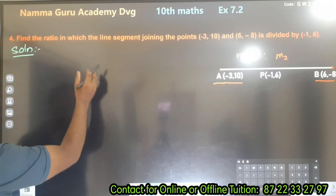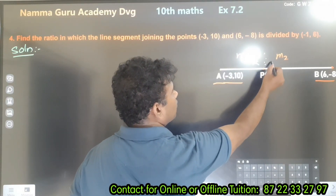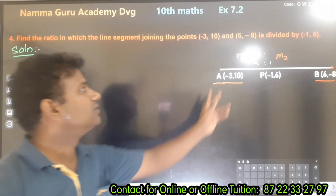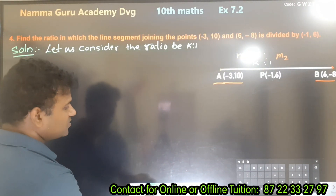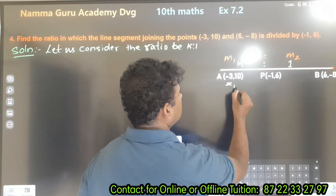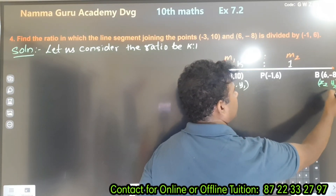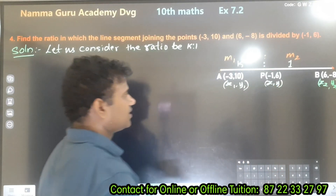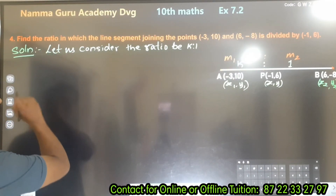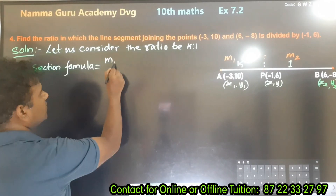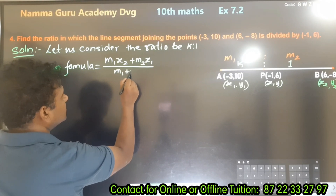Let us consider the ratio as k : 1. Using the section formula, x = (M1 × x2 + M2 × x1) divided by (M1 + M2).